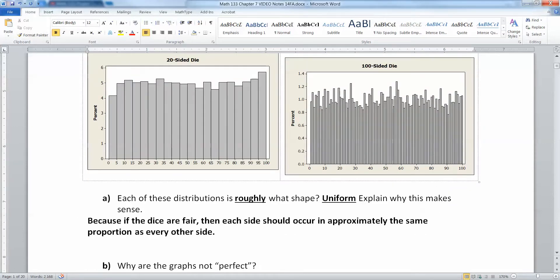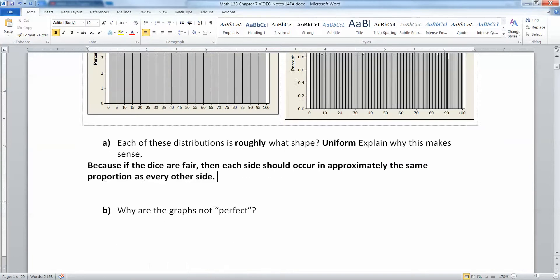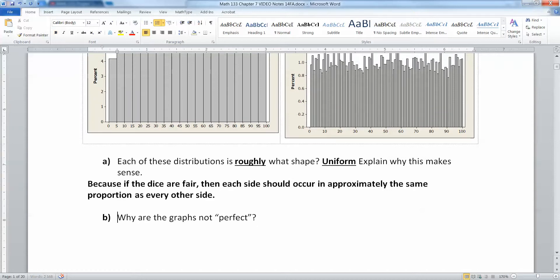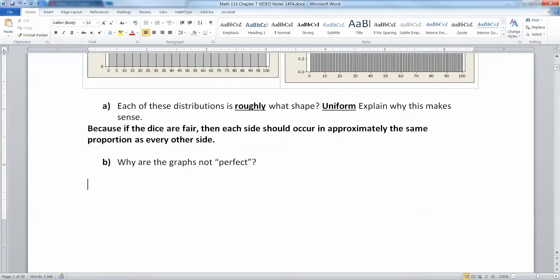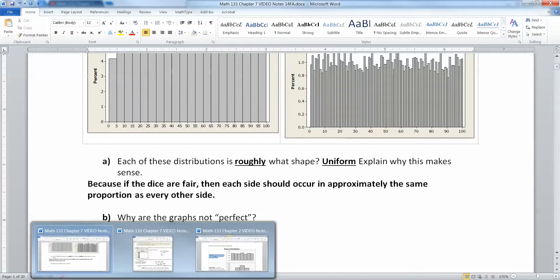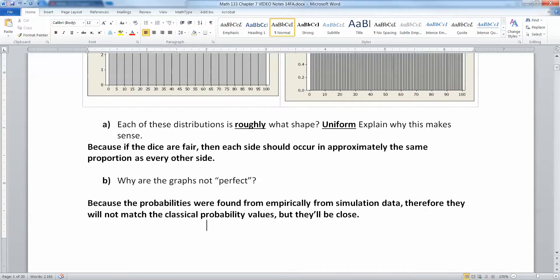Of course, that doesn't mean there isn't a bit of variability, but even this one with the 100-sided die, it looks like they're really far apart. But the high points are like 1.3%, and the low points are about 0.9%, 0.8%. Those aren't actually that far apart from each other. If you roll the die more and more, those bars will get more and more close together. The graphs are not perfect because these came from actual rolling of the dice. They came from empirical data, or in this case, actually simulations.